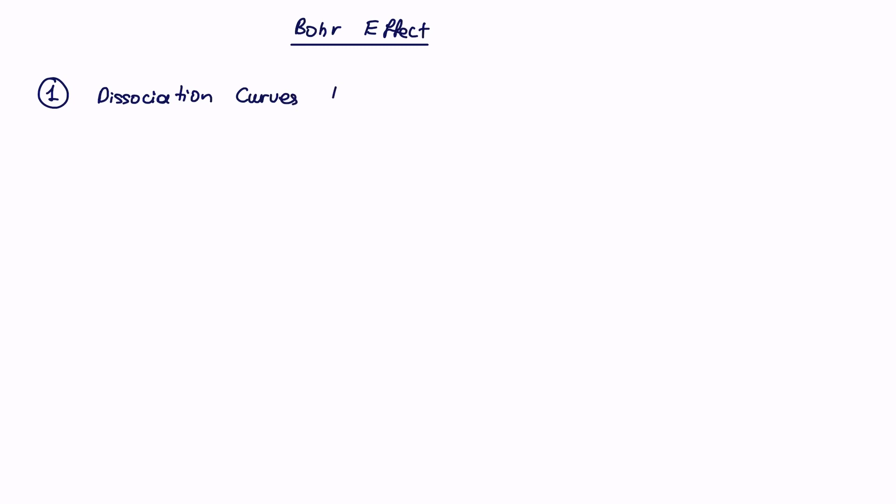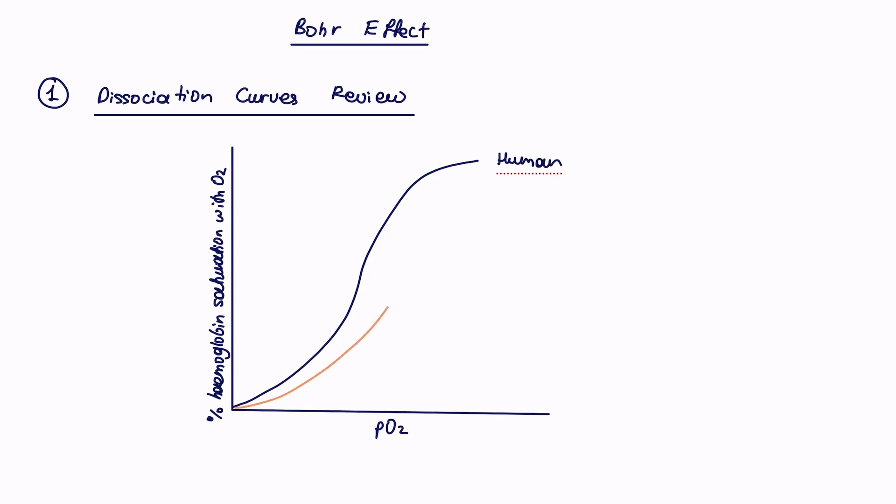We're going to start with a brief review of dissociation curves. Draw a big graph with the x-axis as the partial pressure of oxygen, and the y-axis as percentage saturation of hemoglobin with O2. The dissociation curves take a sigmoid shape, and we can compare different organisms. Depending on which environments they live in, the dissociation curve shapes will change.